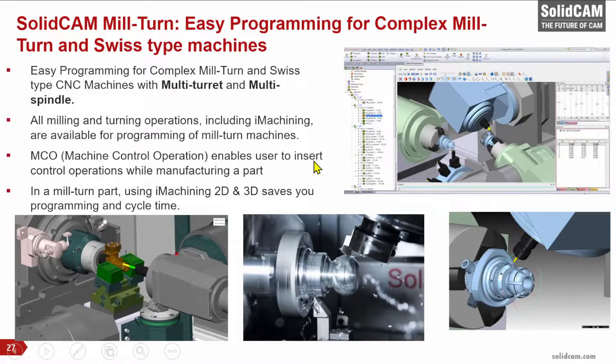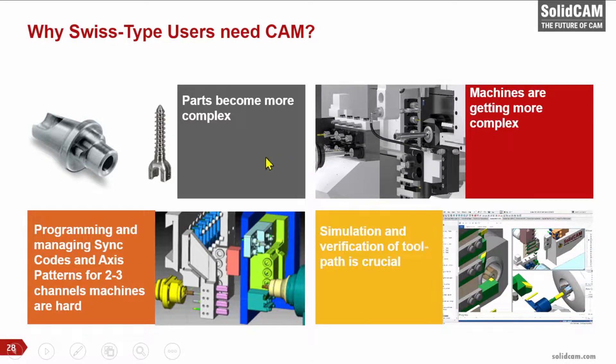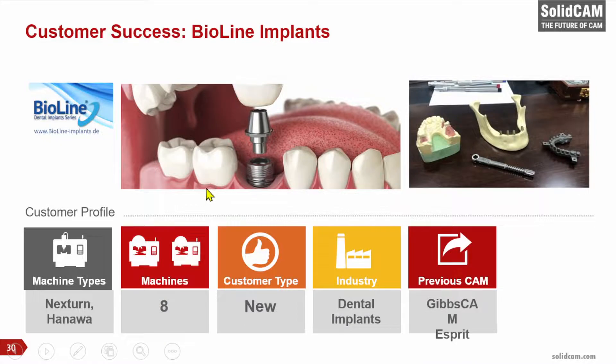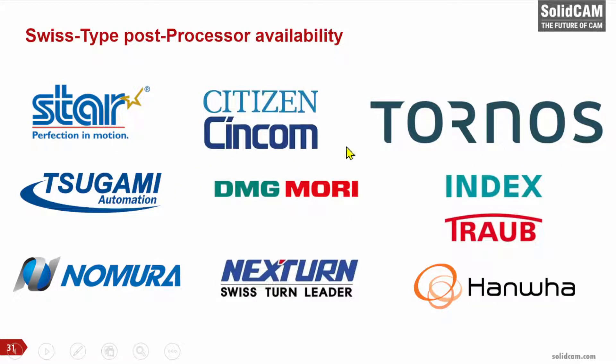We are today the best in Mill-Turn and Swiss for multi-channel machines and Swiss-type as well. Swiss-type users need CAM today because parts and machines have become more complex — you cannot anymore program directly on the Swiss machine because you lack simulation and verification of your toolpath. This is our opportunity to move Swiss-type users who program right on the controller to our great SolidCAM solution. Here's an example of a customer who was using Gipscam and then Esprit, was not happy, and moved to SolidCAM's Swiss solution. We have posts today for all famous Swiss-type brands including Star, Citizen, Nomura, Tornos and others.